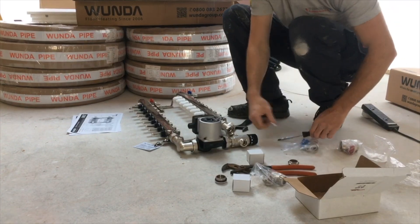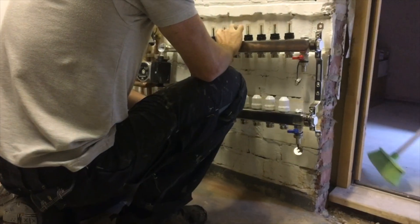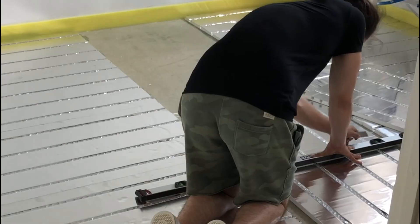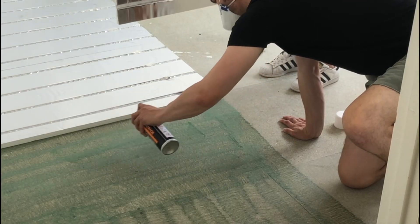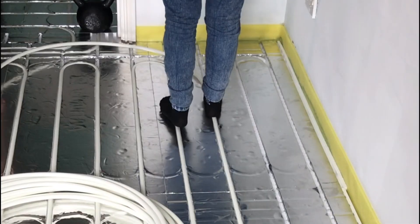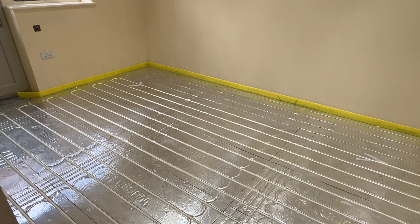Assembling and mounting the manifold can be carried out before the boards and pipe are laid. However, if you are only DIY installing the boards and pipe and having a tradesperson assemble and mount the manifold, it can be left until after all boards and pipe have been laid.